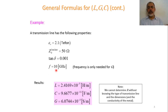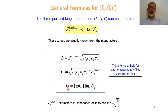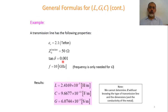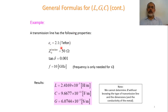The frequency is 10 GHz, so ω = 2π × 10 × 10⁹. The conductance G = ω·C·tan δ = 2π·f·C·tan δ. Applying this gives us the conductance per unit length. It should be noted that we cannot determine the resistance per unit length from this approach — this relation effectively determines only L, C, and G per unit length.